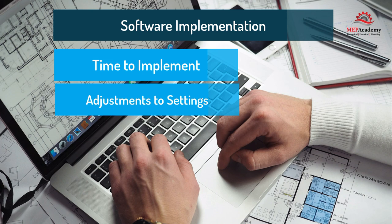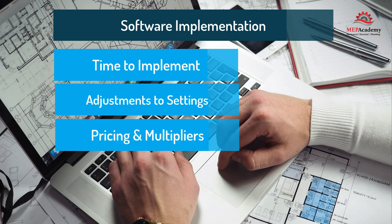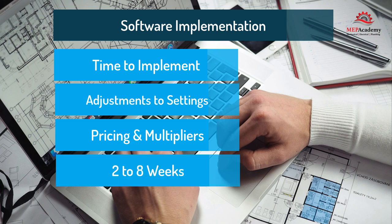There is also the time required to enter pricing data for sheet metal and piping/plumbing discount multipliers. Make sure to allow time for implementation. Most construction estimating software vendors understate the amount of time it takes to implement their programs, so expect anywhere from 2 to 8 weeks, depending on how many systems you need and how close your company's standards are to the boxed standards that come with the software.